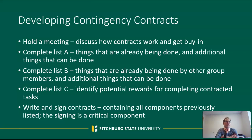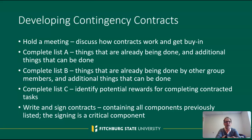Once the first two lists have been developed, there's the completion of List C — potential rewards for completing the contracted tasks. Basically, what are things the learner may want to earn and be willing to work for? And then finally, writing and signing the contract, which contains all of the components previously listed.